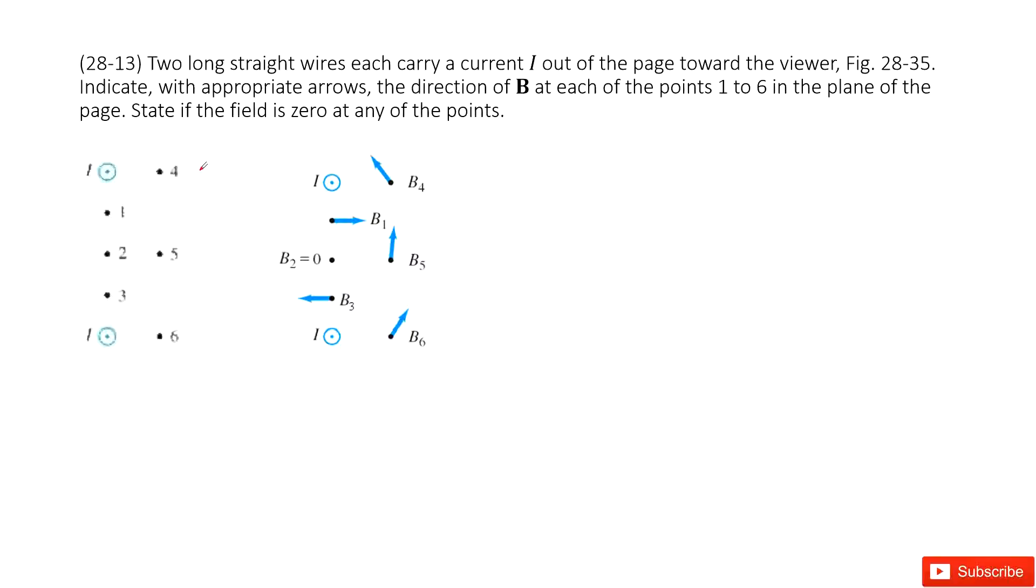Here you can see we have two long straight wires, each carrying current I. The current points out of the page toward the viewer. We need to determine the direction of B at each of the points 1 to 6.